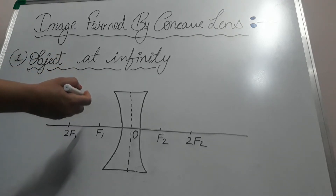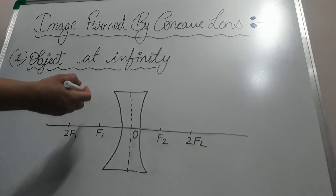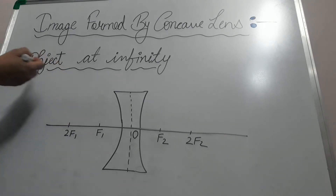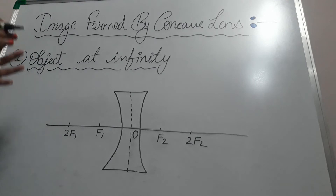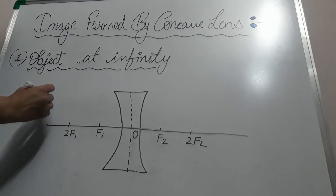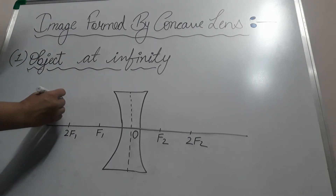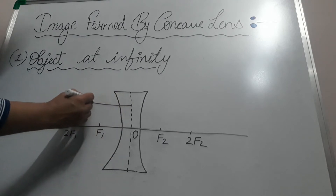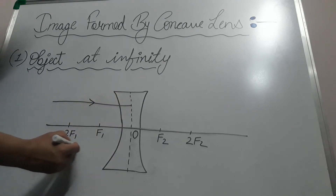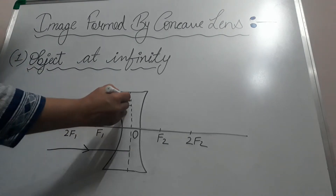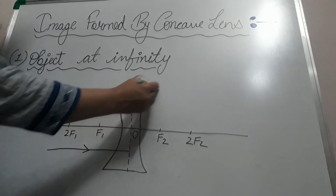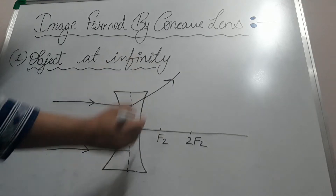In the previous video we discussed image formation through convex lenses. Now, taking the first case: object at infinity. Infinity means we don't know where the object is situated. So the rays are coming parallel to the principal axis.